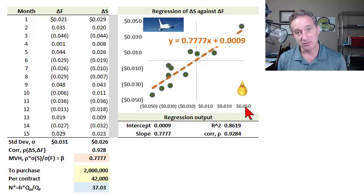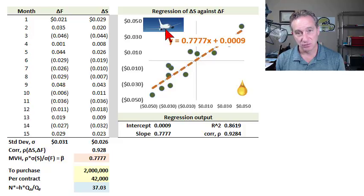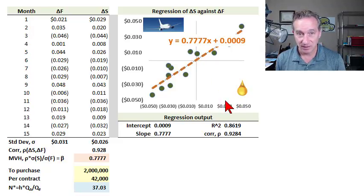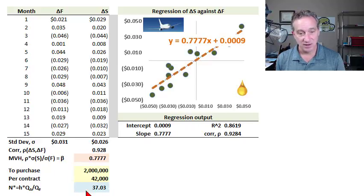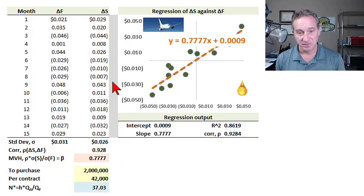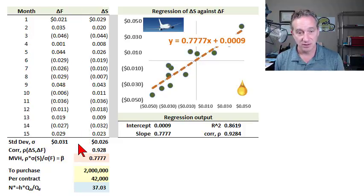But heating oil — the price of heating oil — is highly correlated to the price of jet fuel, and so they can use the heating oil futures contract. When the commodity is not the same but is instead just correlated, we call that a crosshedge. To figure out what the best crosshedge is — the minimum variance hedge — we only need three pieces of information, which are calculated based on a historical window of price change data.